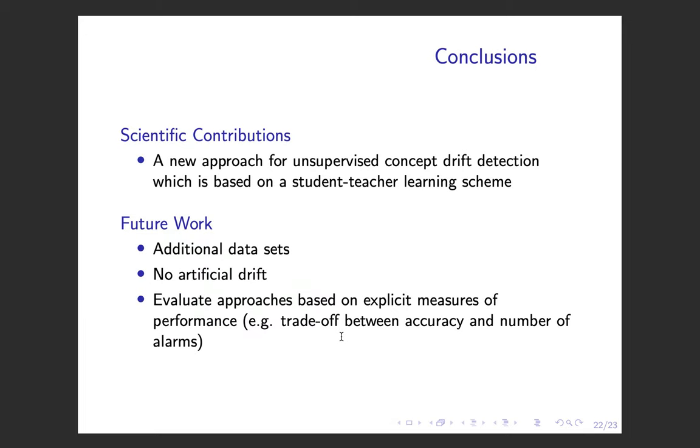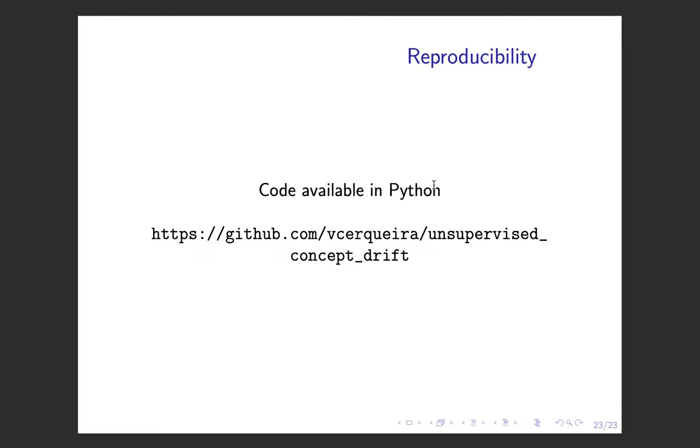In this work, we presented a new approach for unsupervised concept drift detection. The results are encouraging. In future work, we want to extend the experimental setup, considering additional datasets without artificial drift, and evaluating the approach according to explicit measures of predictive performance, trading that off with some measure that quantifies the cost of launching alarms. That's it. Thanks for watching. The code is available in Python.